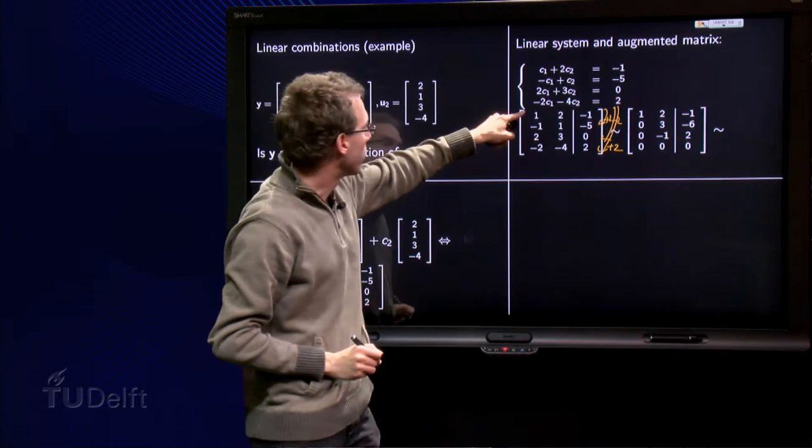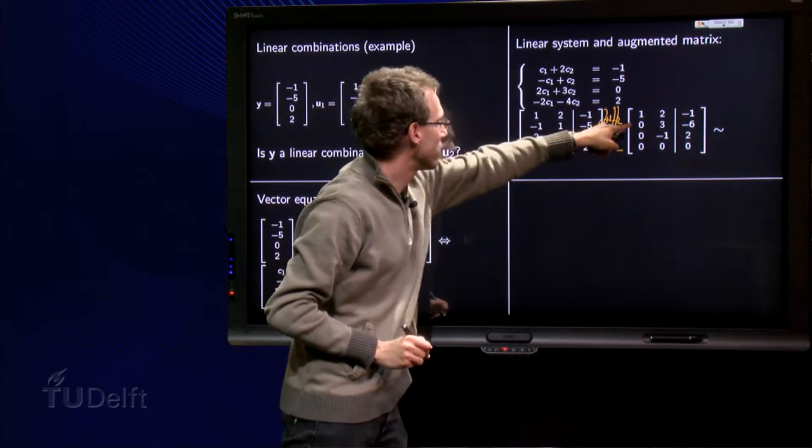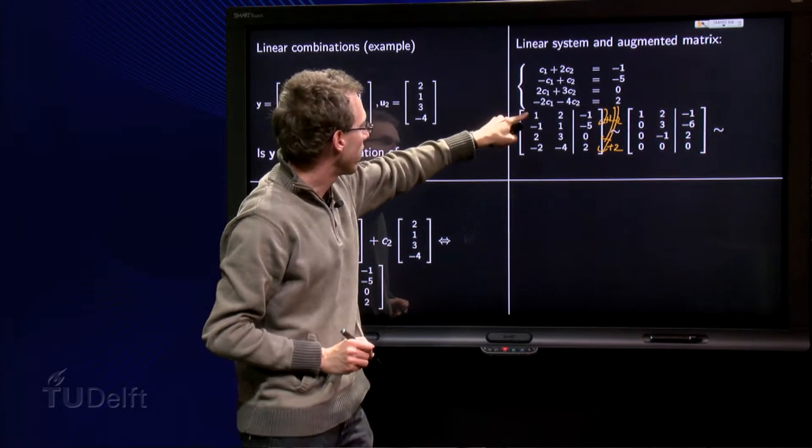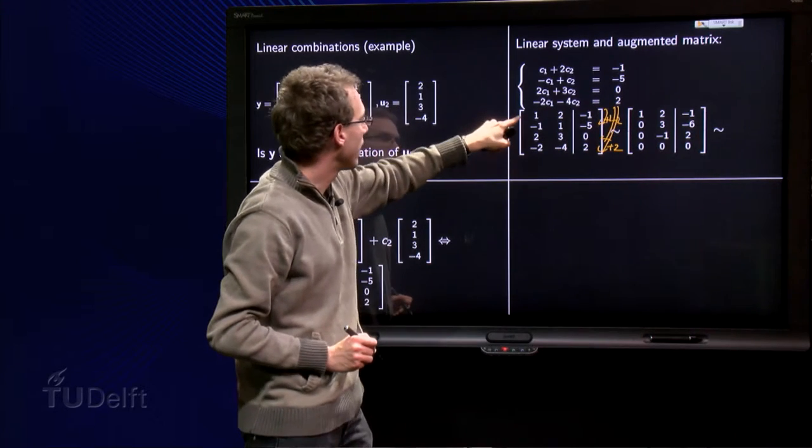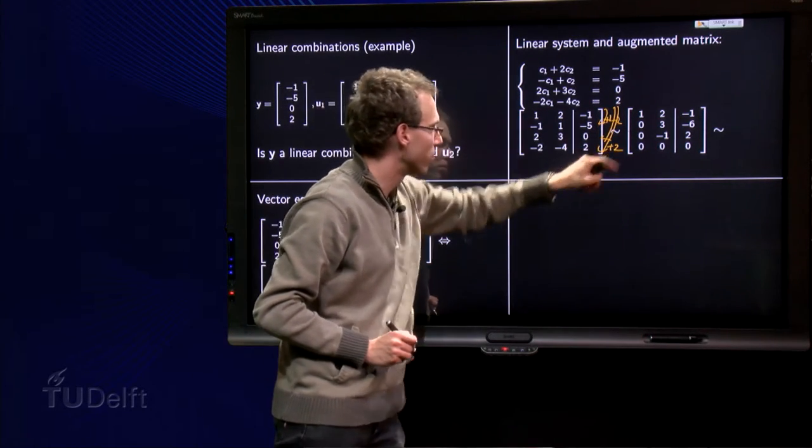Okay, what do we get? Add it here once, we get 0, 3, minus 6. Subtract twice, 0, minus 1, 2 over there, and add twice, 0, 0, 0 for the last row.